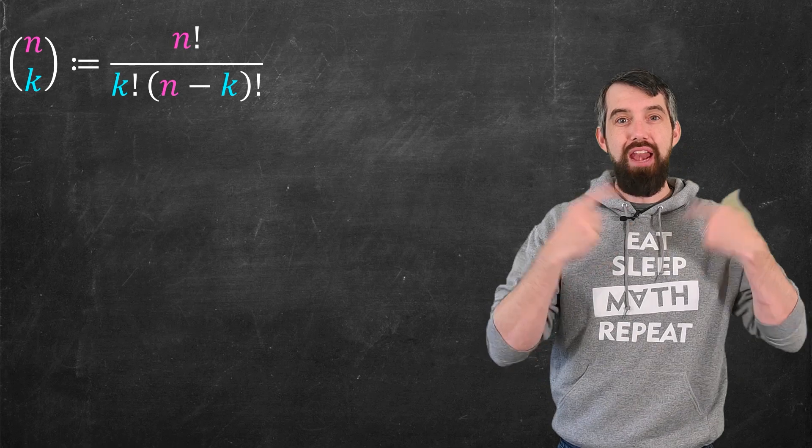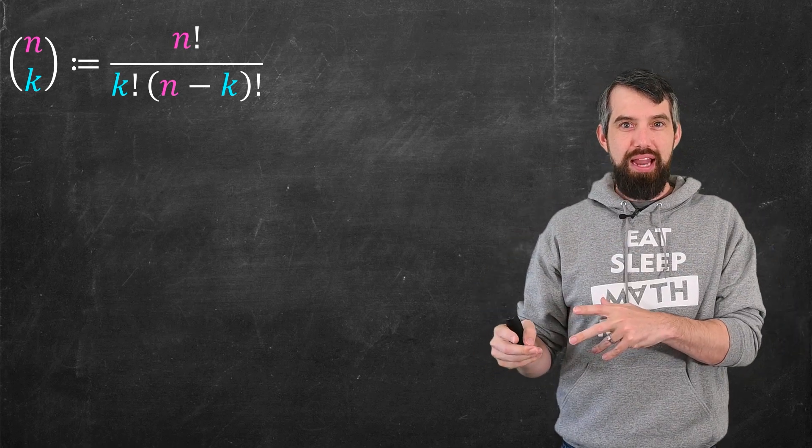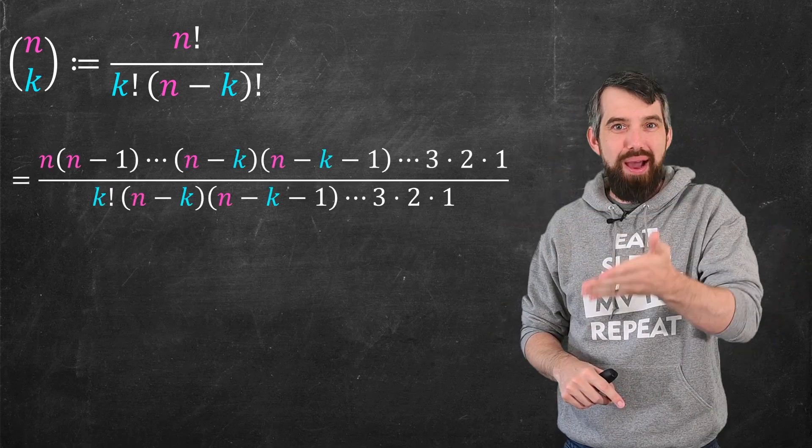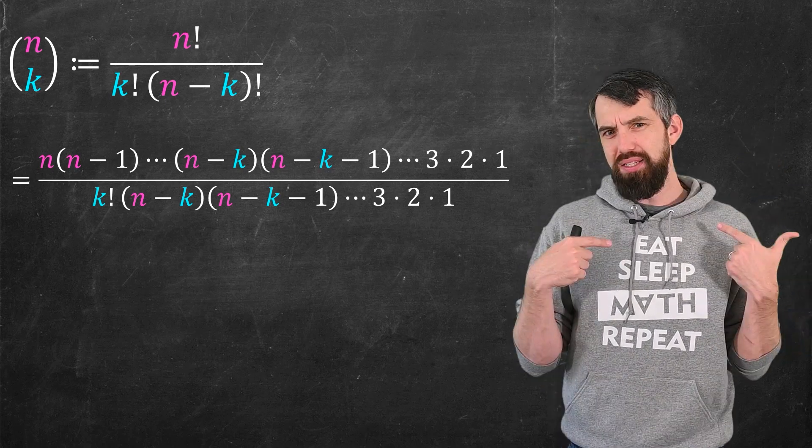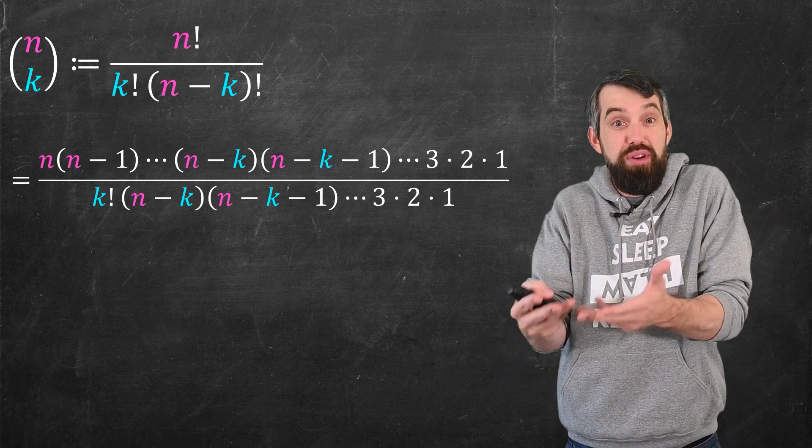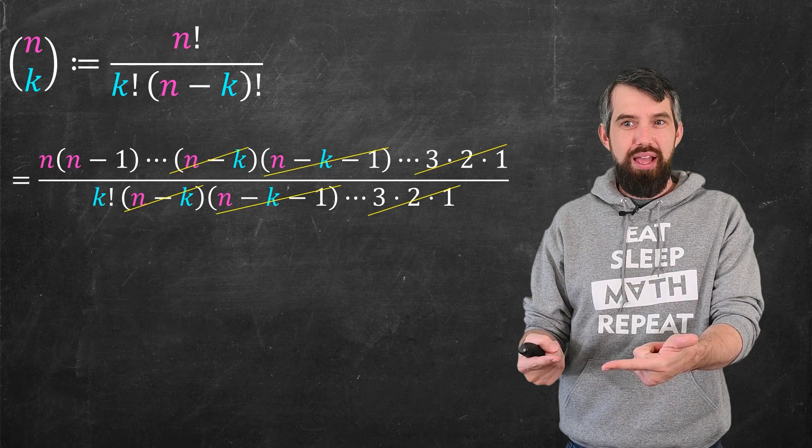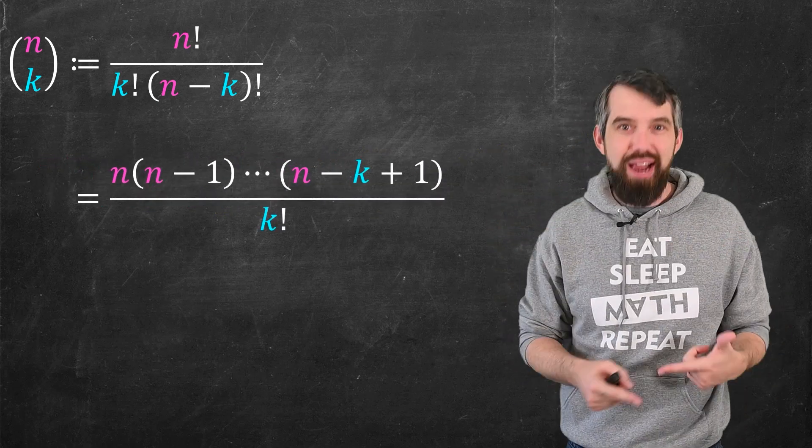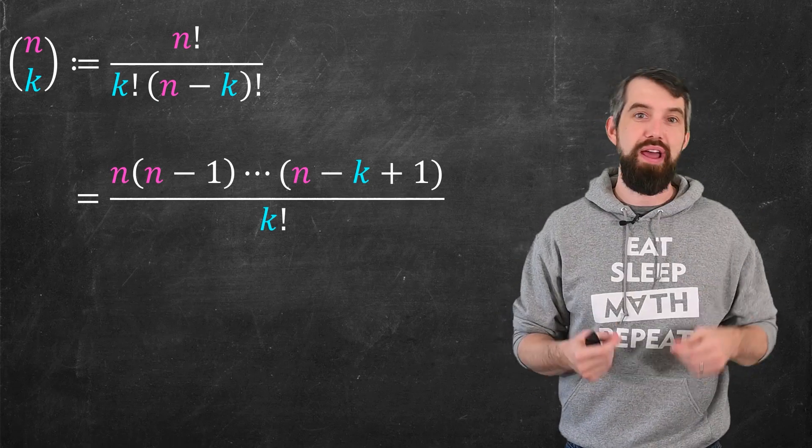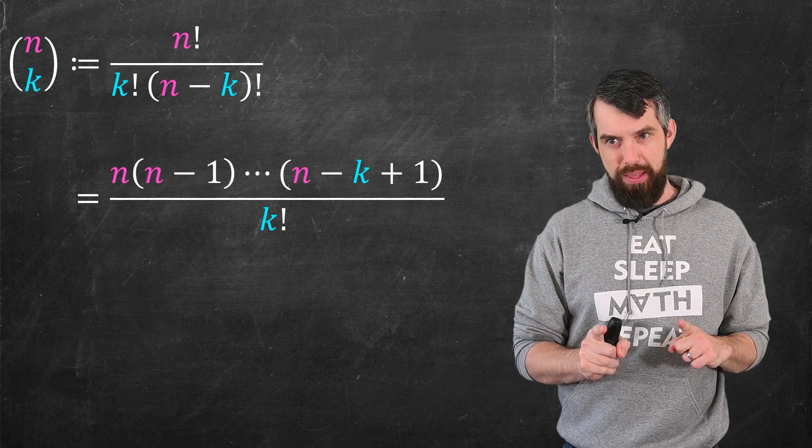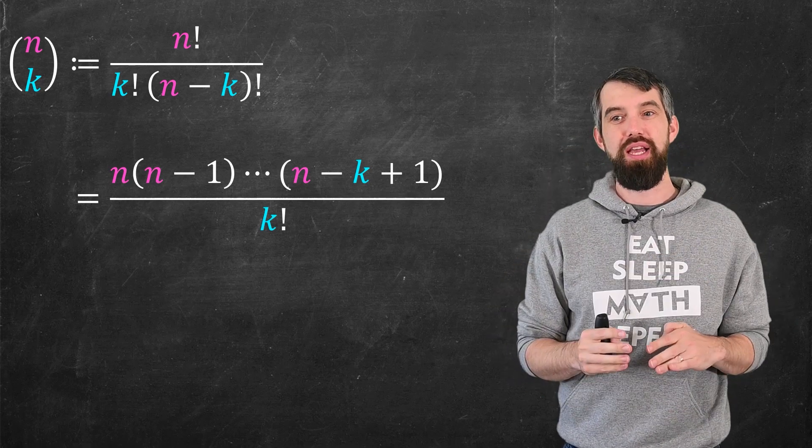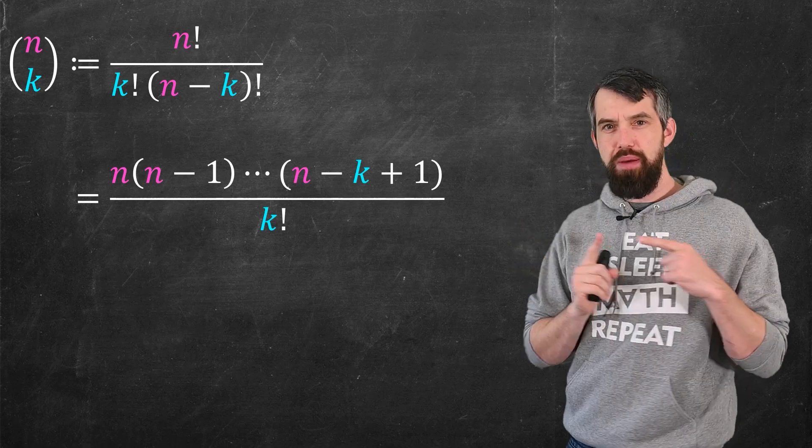n choose k was defined to be n factorial over k factorial times n minus k factorial. And the n factorial over n minus k factorial, if you expand all those out, so the n factorial on the top is like n, n minus 1, dot dot dot, all the way down to 3, 2, 1. So if you divide out by n minus k factorial, which looks like n minus k times n minus k minus 1, dot dot dot, 3, 2, 1. It sort of cancels all those factors at the tail. And so this is the same thing as saying n times n minus 1 times n minus 2 all the way down to the final one that survives n minus k plus 1, and then divided by k factorial on the bottom.